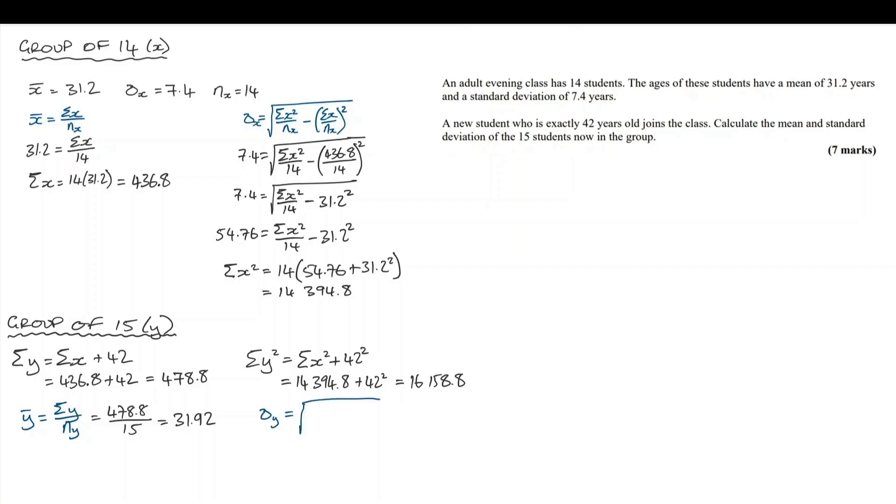14,394.8 plus 42 squared gets us 16,158.8. Now that we have that, we can go ahead and calculate the standard deviation for the y values. So the sum of y squared over the n value for y minus the sum of y over n, all squared.